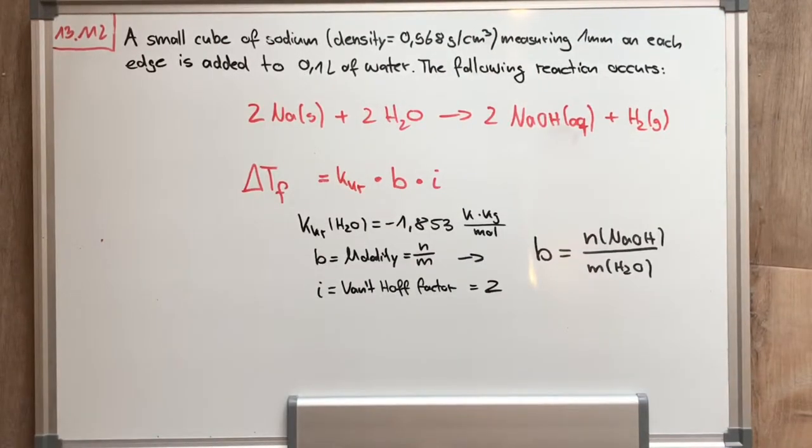The formula for the freezing point is ΔTp = Kw · b · i, the cryoscopic constant of water multiplied by b the molality, multiplied by i the van't Hoff factor. The cryoscopic constant of water is -1.853 K·kg/mol.